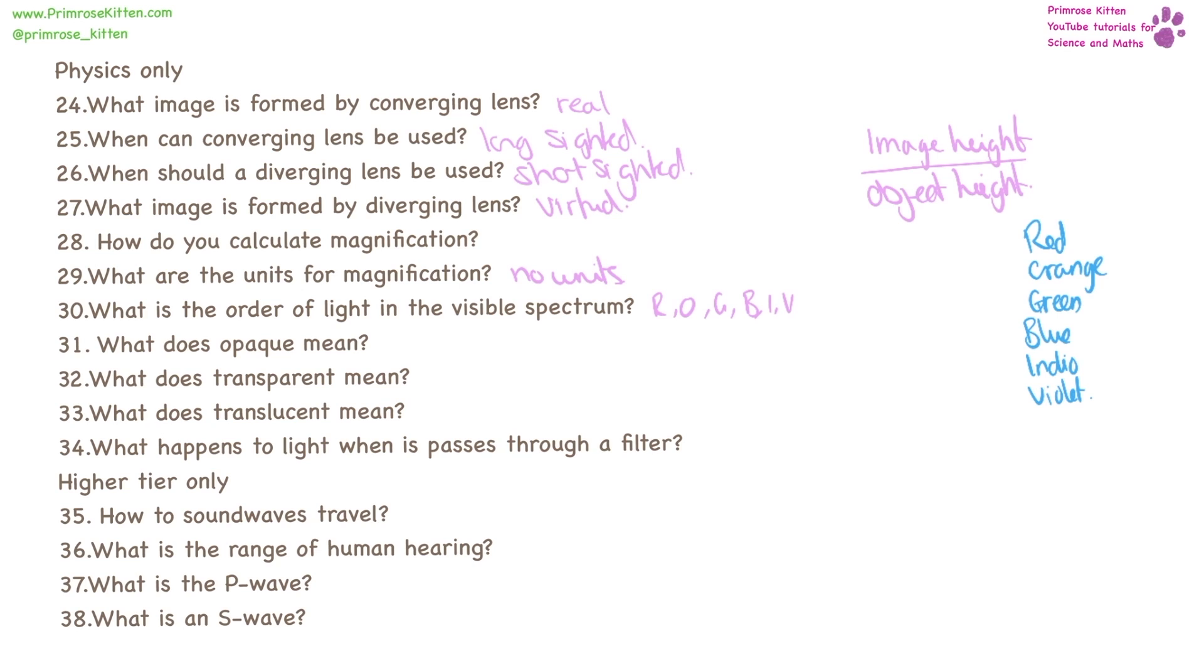If an object is opaque, it means you can't see through it. If an object is transparent, it means you can see through it. If an object is translucent, you can see light but not shape. It's kind of semi-transparent.